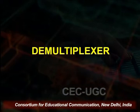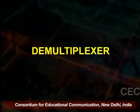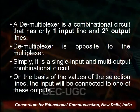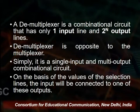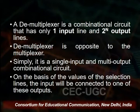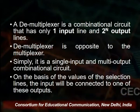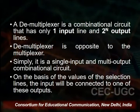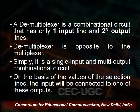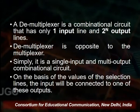A demultiplexer, as the name suggests, is the reverse of what a multiplexer does. It is a combinational circuit just like a multiplexer, but it has only one input line and 2 to the power n output lines — completely opposite of what a multiplexer was. A multiplexer had 2 to the power n inputs and 1 output; a demultiplexer has 1 input and 2 to the power n output lines. Simply, it is a single-input, multi-output combinational circuit.